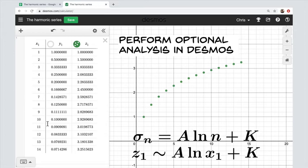And the index n is being captured by the symbol x1. So this is the expression we should put into a cell: z1 tilde A ln(x1) plus K.